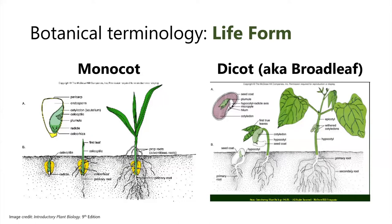Monocots are flowering plants characterized by seedlings with one cotyledon. Their leaves have parallel veins and flower parts are typically in multiples of threes — think grasses and grass-like plants such as lilies. Dicots are also referred to as broadleaf weeds. They are flowering plants characterized by seedlings with two cotyledons — if you've ever planted beans and seen those two succulent leaf-like structures emerge, those are your cotyledons.